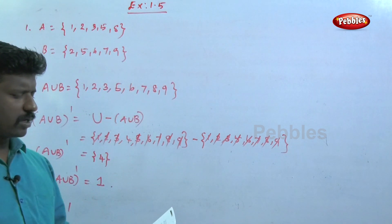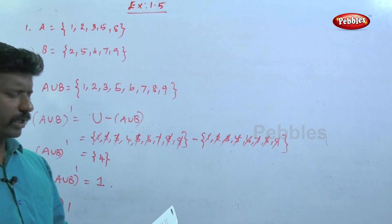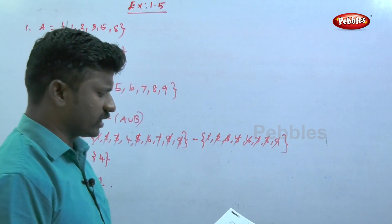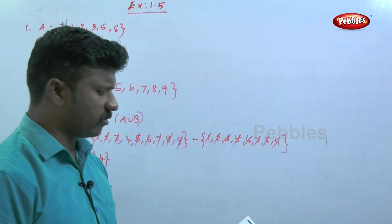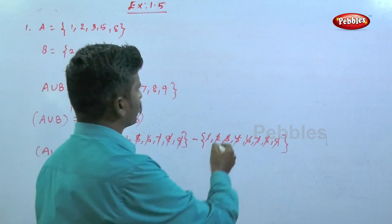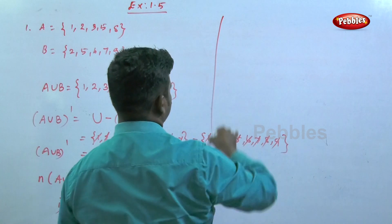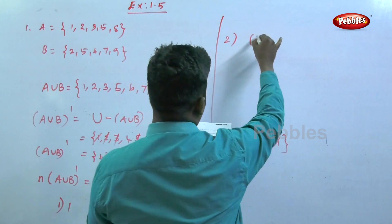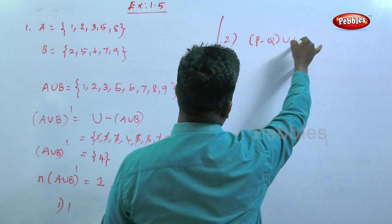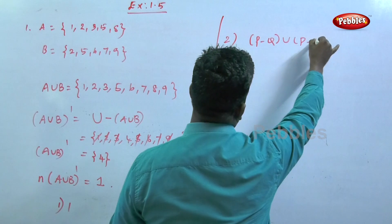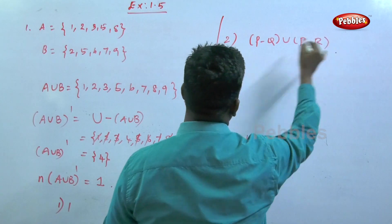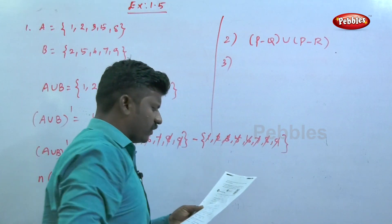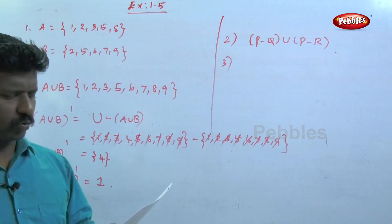The next question: for any three sets P, Q, and R, the formula for P minus (Q∩R) is P minus Q union P minus R. The second question answer is P minus Q union B minus R.